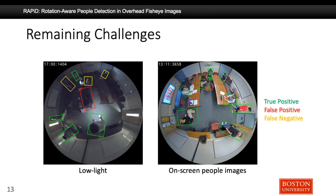Even though RAPID achieves very good results in terms of overall metrics, it still fails in some extreme scenarios. Green boxes show true positives, red boxes show false positives, and yellow boxes show false negatives. The left image shows a low-light scenario from SEPTOF, and RAPID misses some people in those regions due to low visibility, also producing a false positive detection in the middle region. In the right image, some people images shown on a screen are detected by RAPID but are not annotated in the ground truth, so they are counted as false positives. In most applications, these on-screen people images should be omitted — for example, in a people-counting scenario, they would incorrectly count projected images rather than people inside the room.